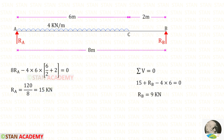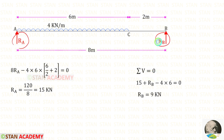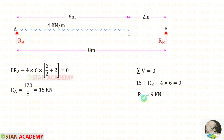Now we can apply the rule ΣV = 0 to find RB. RA and RB are acting upwards so both are positive. This load is acting downwards so it is negative over the distance of 6. For RB we will get 9 kilo newton.